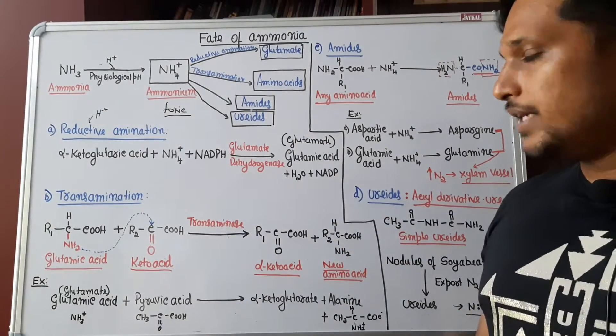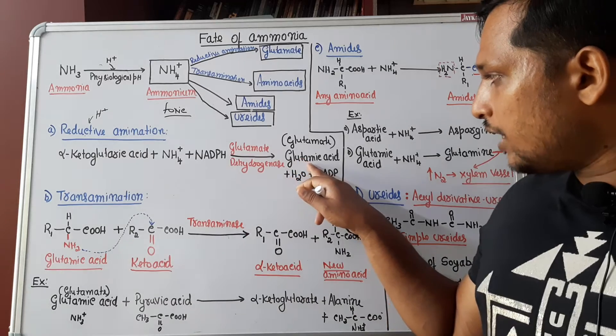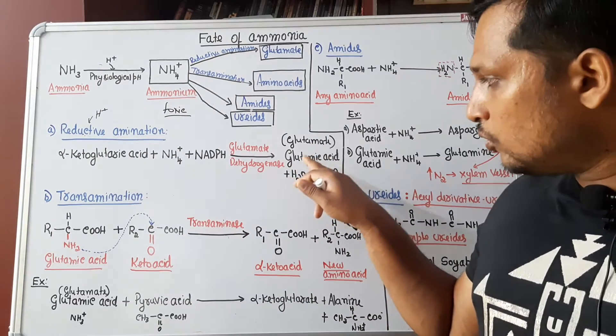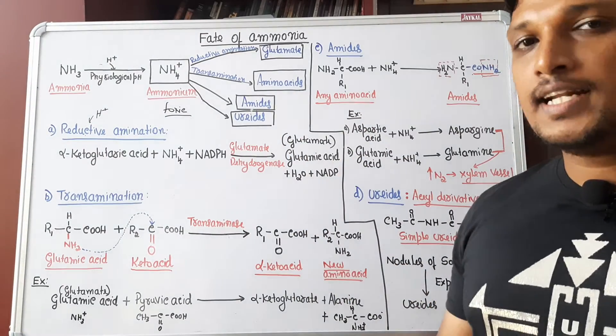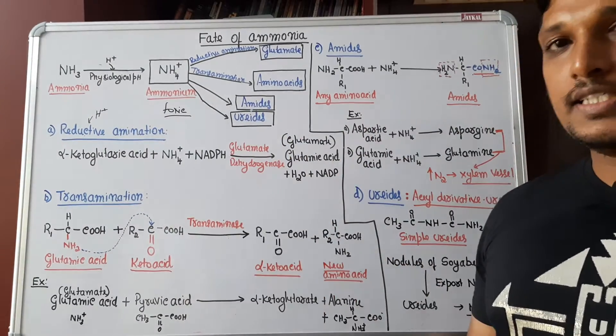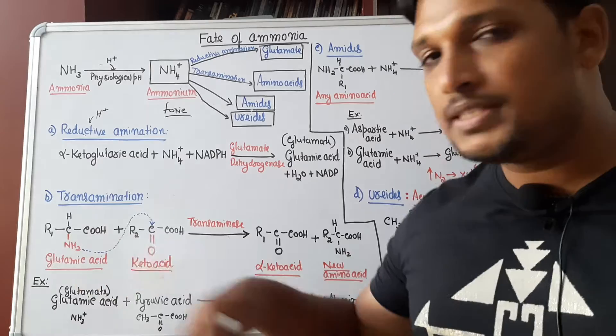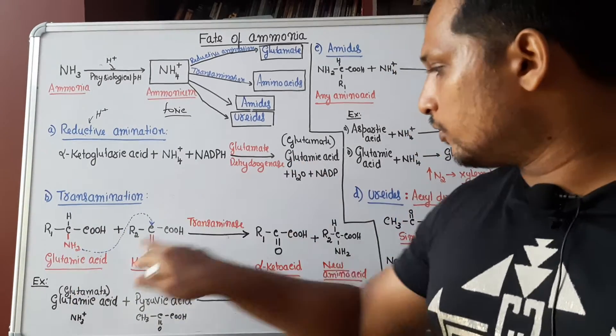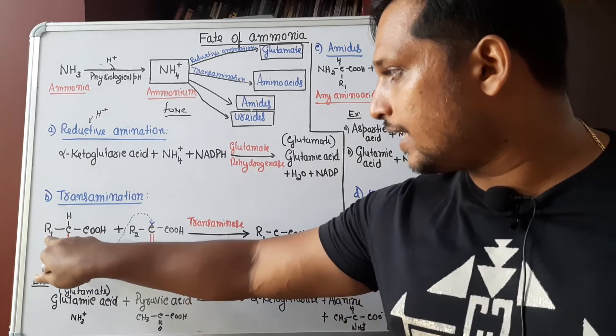It is by transamination whereby glutamic acid is utilized as a substrate to produce other amino acids. Let us understand how transamination occurs. Trans means transferring amino group. Now we have taken this glutamic acid. How to represent an amino acid?